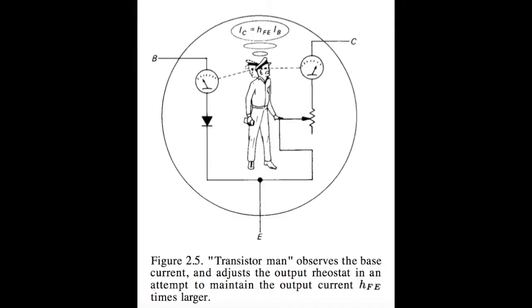Here's a nice picture of Transistor Man. If you pick up a copy of Horowitz and Hill's The Art of Electronics, you'll find him in there — they just came out with a third edition, which is actually a pretty nice read.